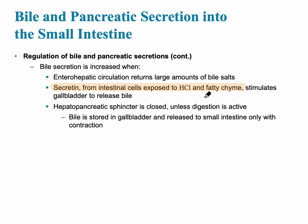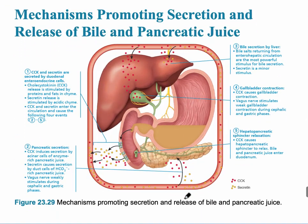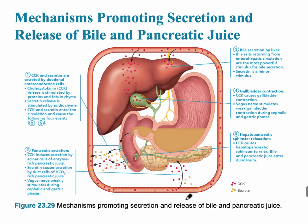The hepatopancreatic sphincter is closed unless digestion is active. Looking at step one on the left-hand side of the diagram, secretin and CCK are secreted by the duodenal enteroendocrine cells. Enteroendocrine refers to hormones released into the bloodstream, shown here by orange and red colored molecules signifying CCK and secretin respectively.